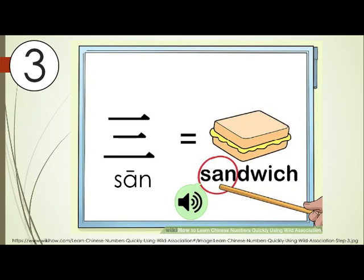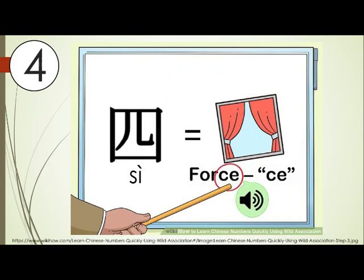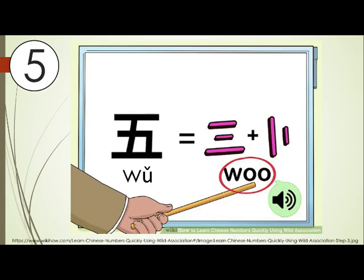Number three is 三 (sān) — like 'sandwich', sān. Number four is 四 (sì) — force the 's', sì, sì. Number five is 五 (wǔ) — like 'w', wǔ, just put a prolonged sound, wǔ.